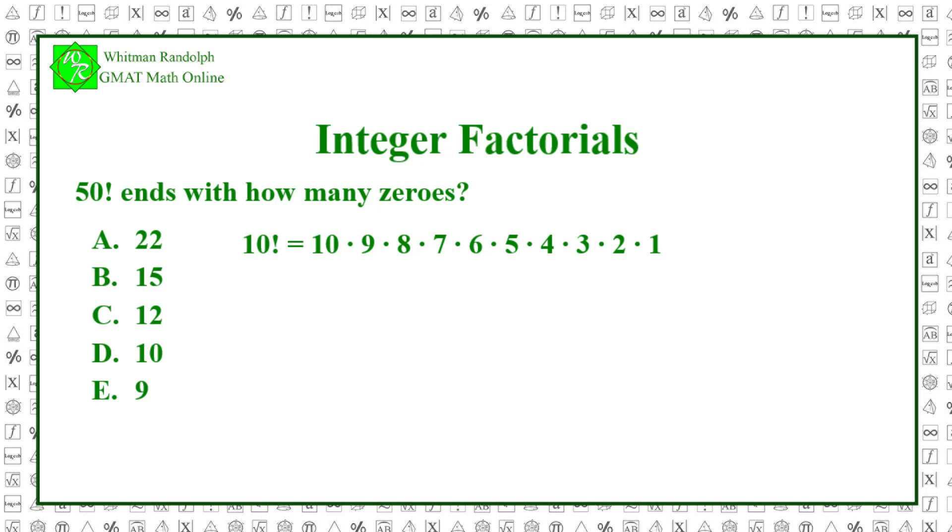In 10 factorial, there are two numbers, 5 and 10, which are divisible by 5. That means that 10 factorial will have two zeros at the end.